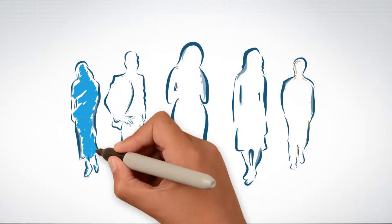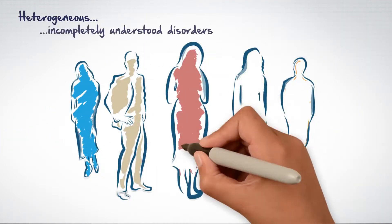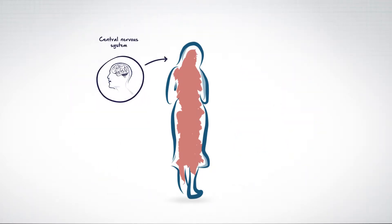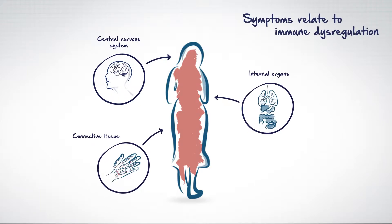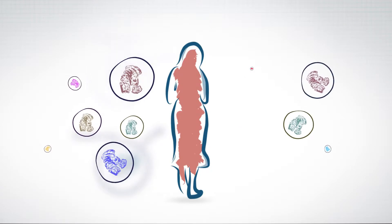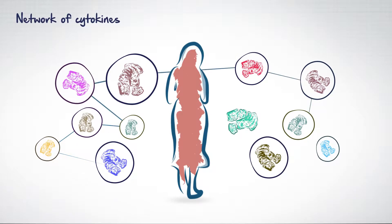Autoimmune diseases are a heterogeneous group of incompletely understood disorders. Patients who suffer from them have numerous symptoms relating to the dysregulation of their immune system as well as from widespread systemic inflammation. The complex pathophysiology of these disorders is regulated in part by a network of different cytokines.